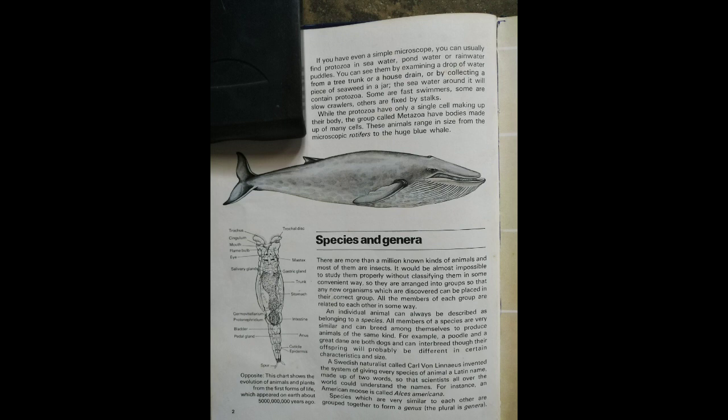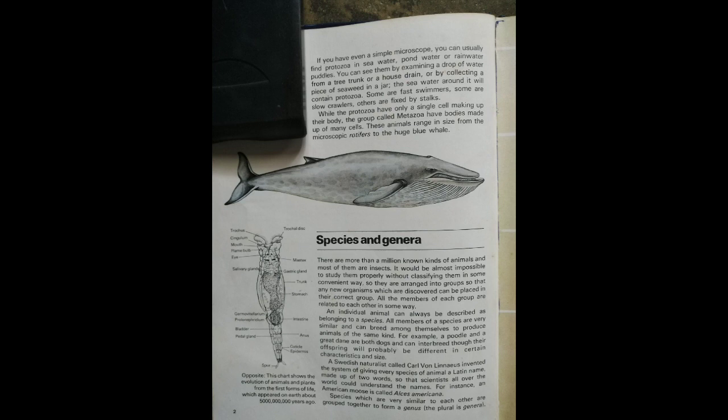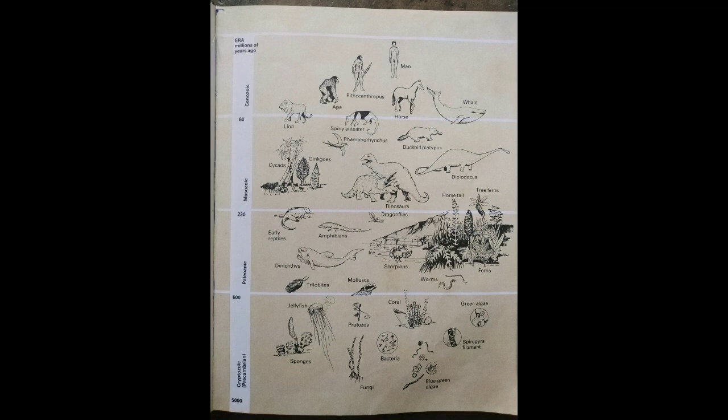However, despite its size, the rotifer has a very complex multicellular structure. This chart shows the evolution of animals and plants from the first forms of life, which appeared on Earth about 5 billion years ago.